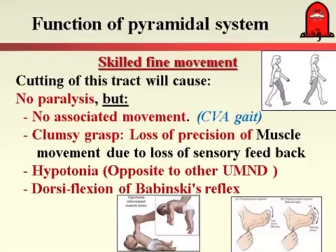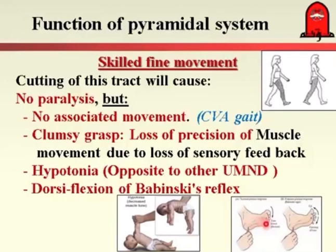In pure damage of the pyramidal system, there will be hypotonia — decrease in tone. The muscles will lose their innate tension. Another property observable on clinical examination in a patient with pyramidal system damage is what is called dorsiflexion Babinski reflex. In the Babinski reflex, we scratch the sole of the foot; the patient shows fanning of the toes and dorsiflexion of the big toe. In a normal subject, scratching the sole produces adduction of the toes and plantar flexion of the big toe.